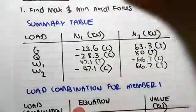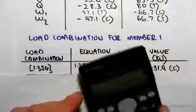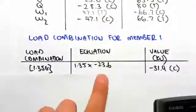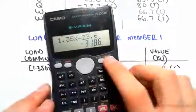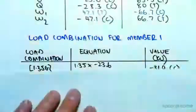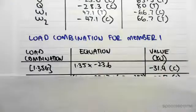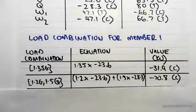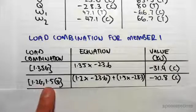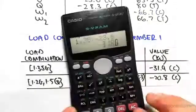G was minus 23.6, so it's 1.35 by minus 23.6, gives us minus 31.9 roughly, that's in compression. The next load case is 1.2G plus 1.5Q.